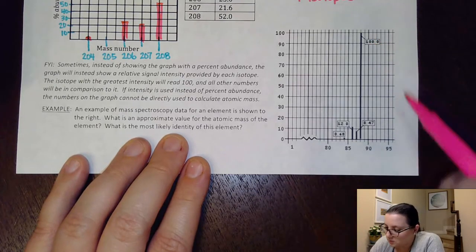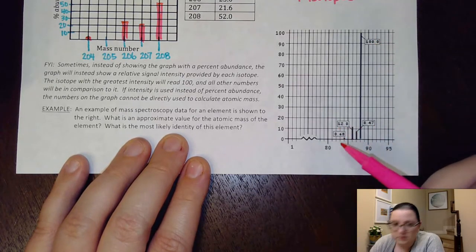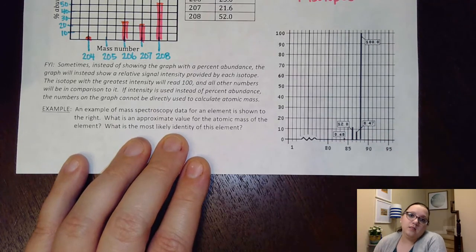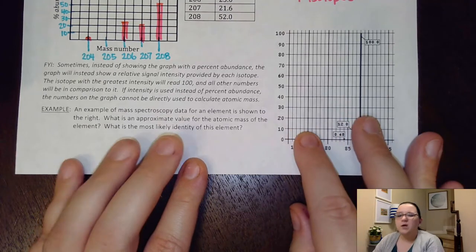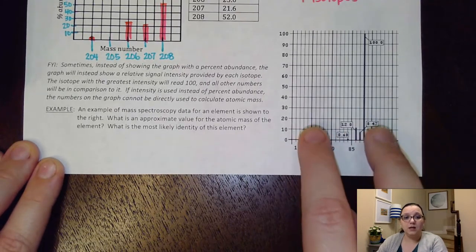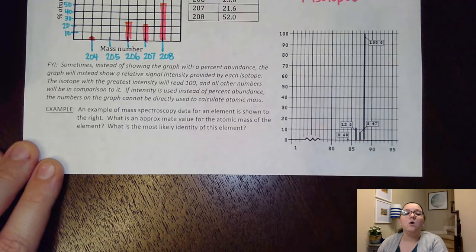What you would have to do is go calculate the fraction involved. Like, if I added all these up, 100 plus 8.47 plus 12.68, if I put 100 over that number, I could then get what the percent abundance would be or the fraction abundance would be. So just be very careful if you actually had to calculate with something like this. Be careful if you have intensity data or percentage data.